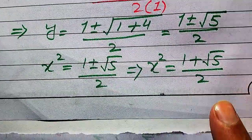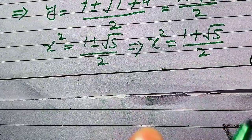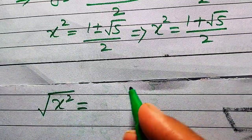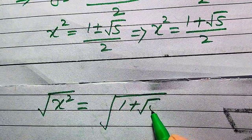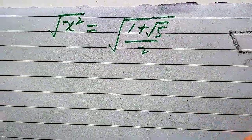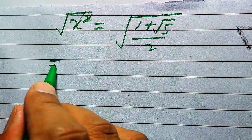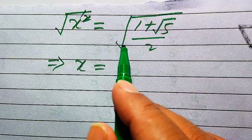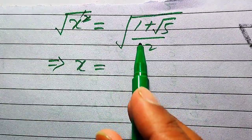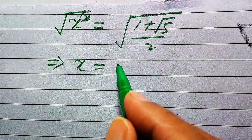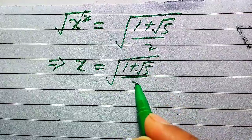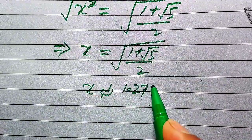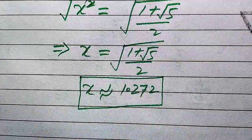Taking the square root of both sides, we get x = √((1 + √5) / 2). Since side lengths must be positive, we take only the positive root. The approximate value of x is 1.272, and this is the final answer.